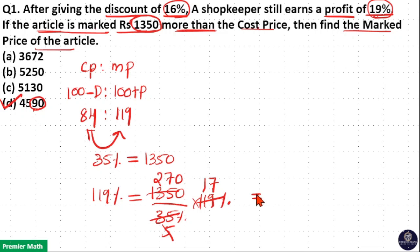So option D is your answer. That is, this is 4, 5, 9, 0. Now if you don't know this formula,